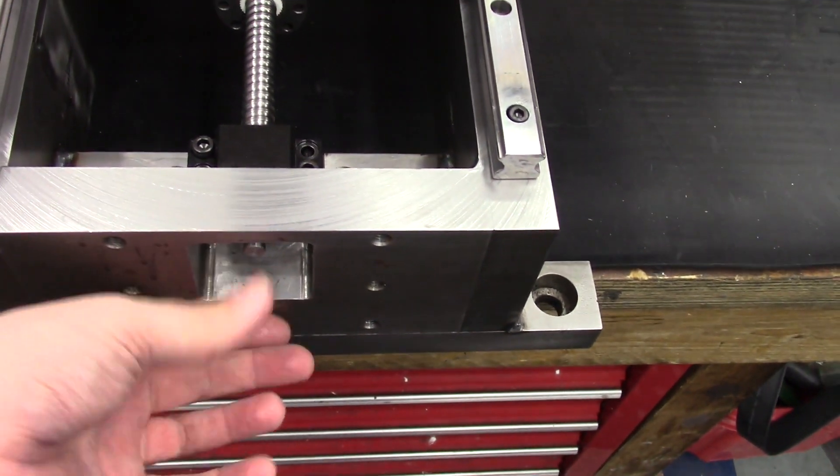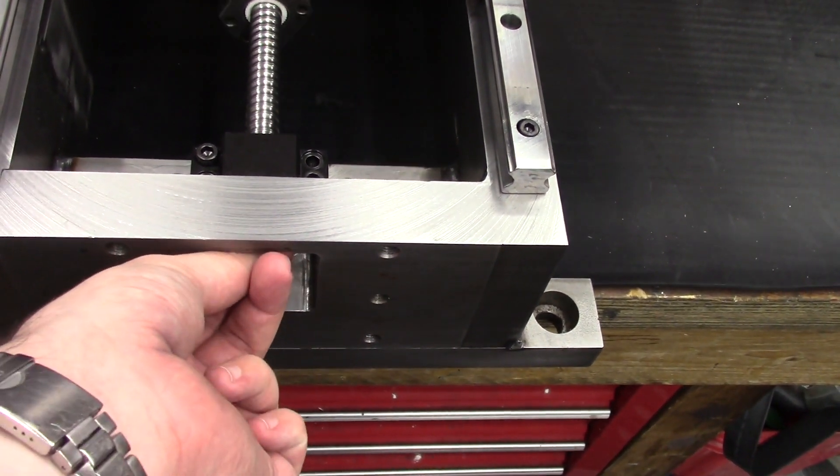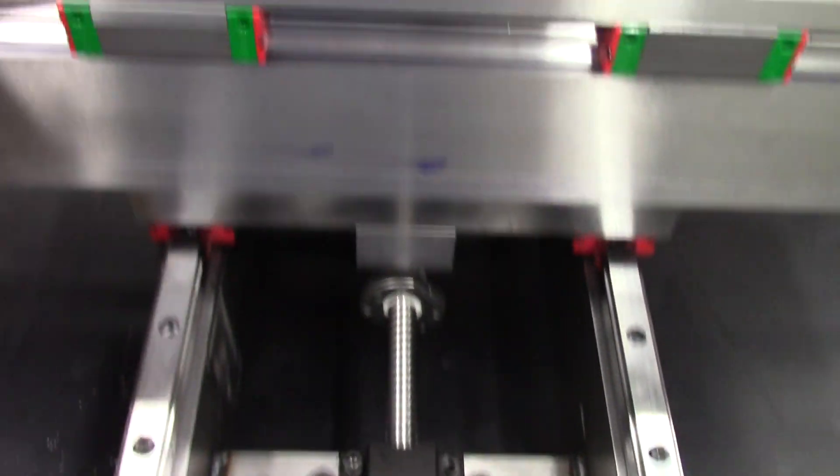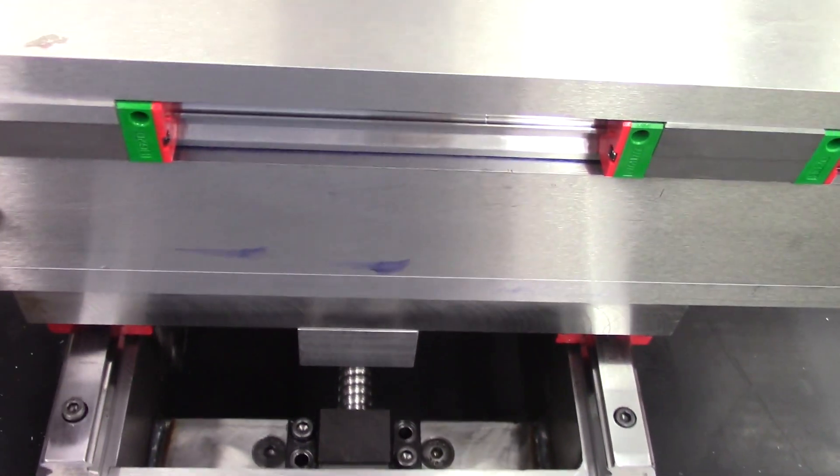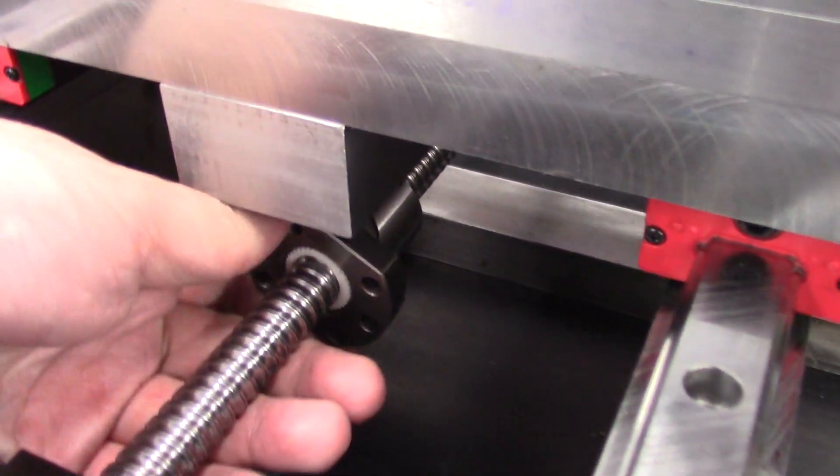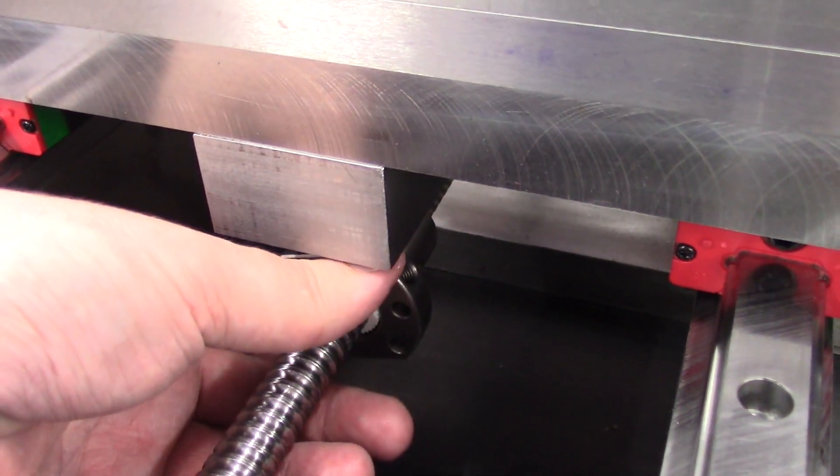Obviously there's going to be a motor here, and as the ball screw turns, it will feed the axis in and out. I haven't made the mounts for the ball screw nuts yet, but they're going to bolt onto this piece here.